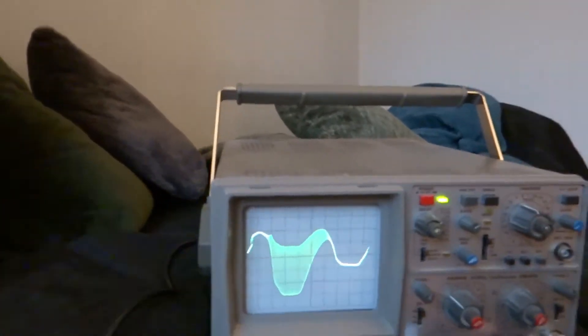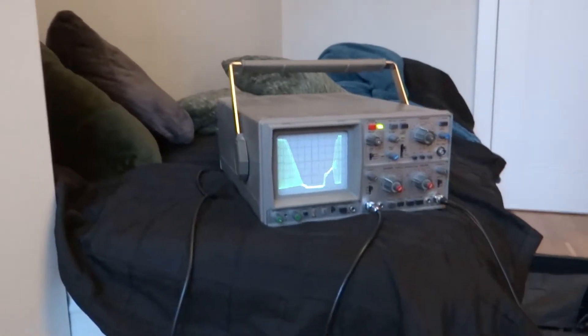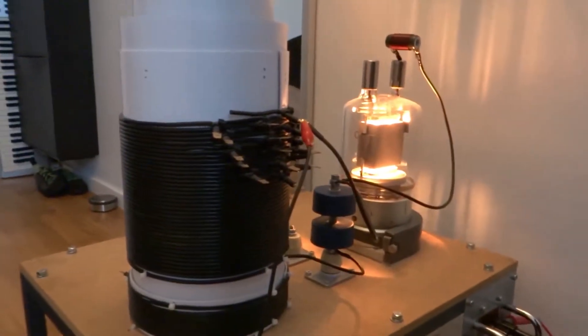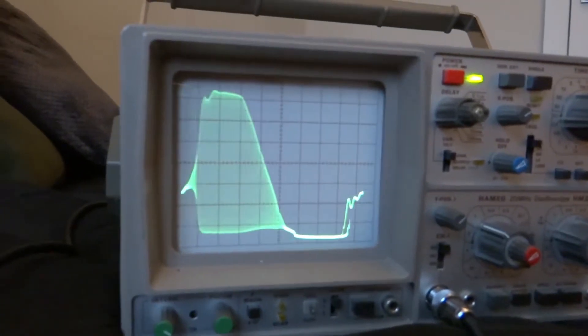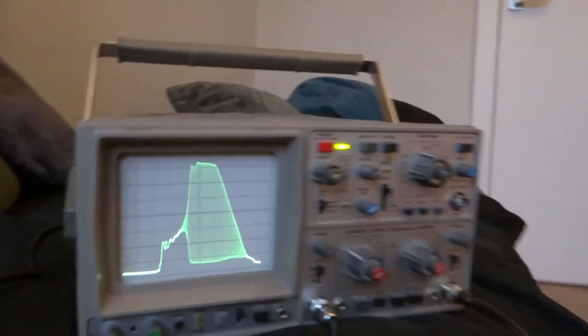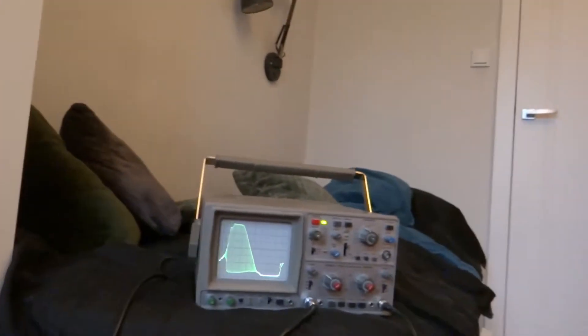Just for kicks I decided to measure the anode voltage and this seems to be the waveform it gives me. That's at 20 volts per division. Input voltage is about, let's power that thing back on.